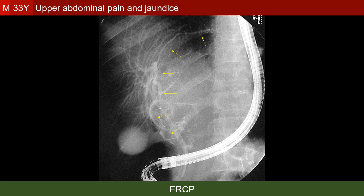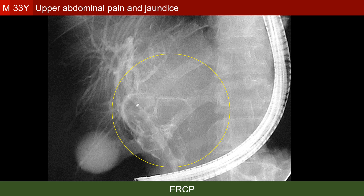ERCP showed displacement of the bile ducts by the left lobe lesion, and showed two other important signs. First, the extravasation of contrast agent outside the bile ducts. Here is a magnified view — it is clear that the contrast medium lines do not fit with the ramifications of the bile ducts, and therefore they are most probably extravasations.